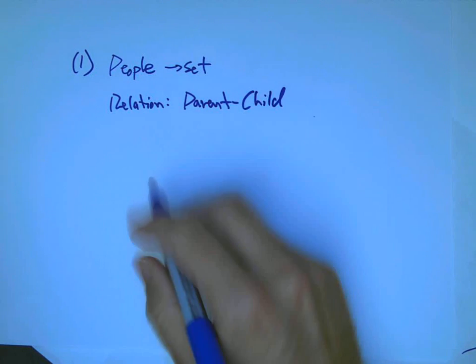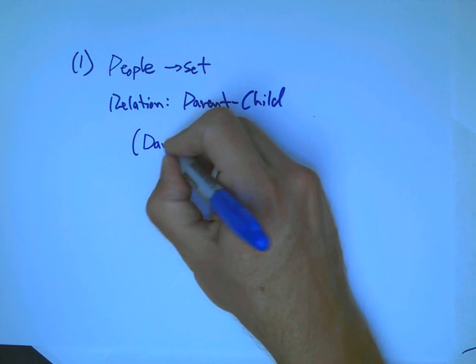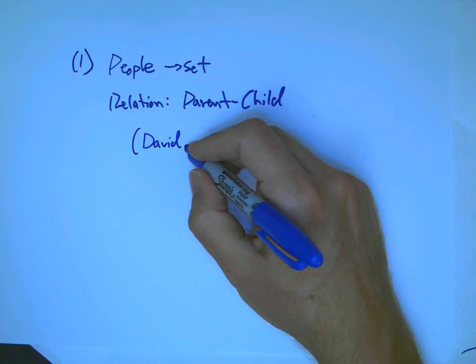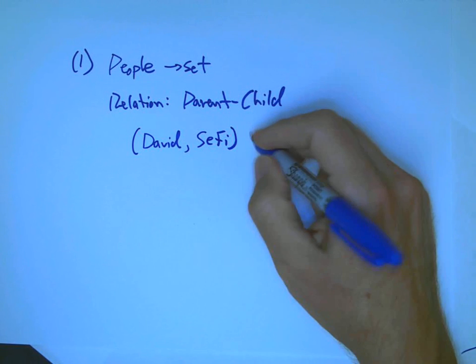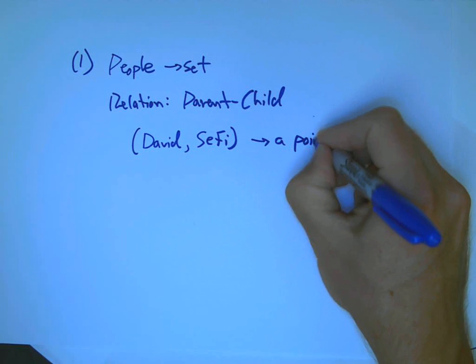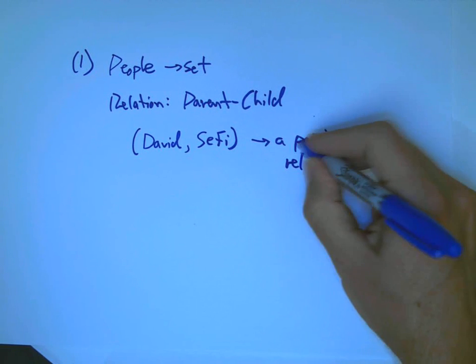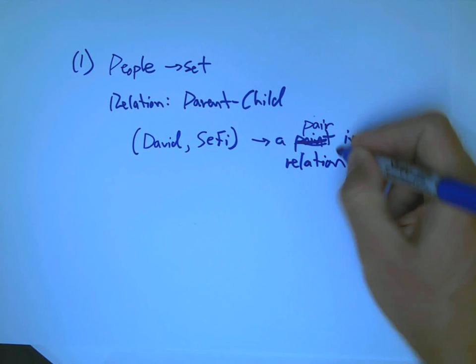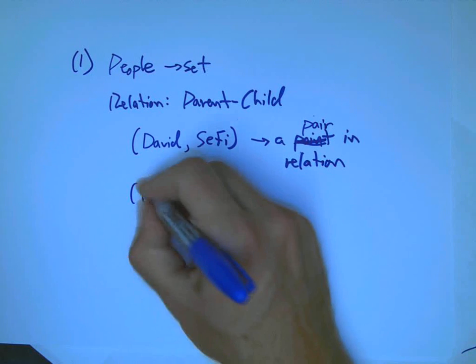Let me make that more precise. Like, I, that's my first name, in case you didn't know that, I, David, am a parent to my son, Sephie. And so that's going to be a point or a pair. Let's emphasize that. It's an ordered pair that's in the relation because I am the parent of my child, Sephie.